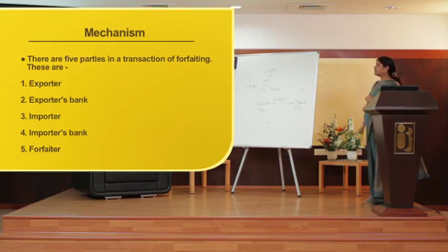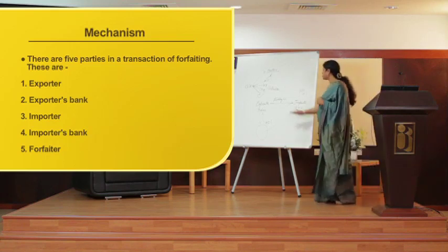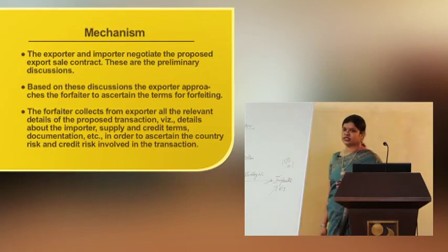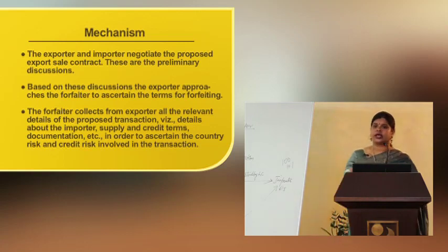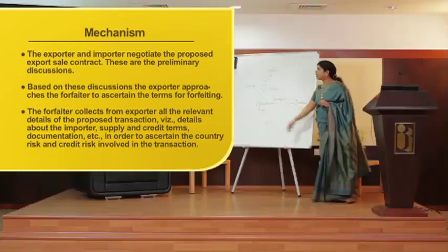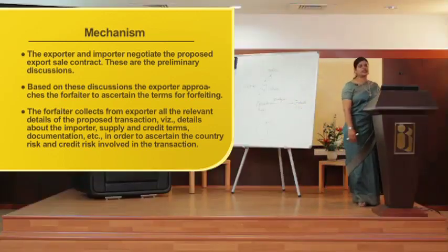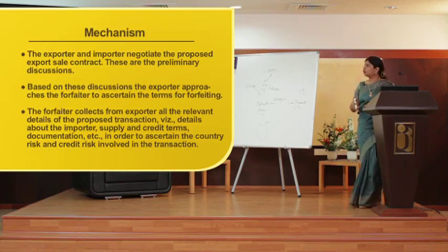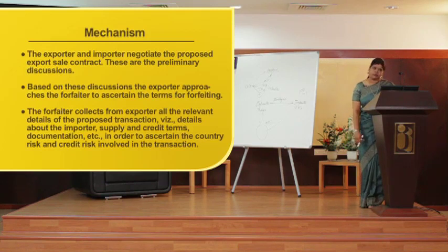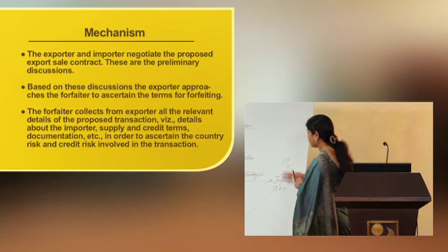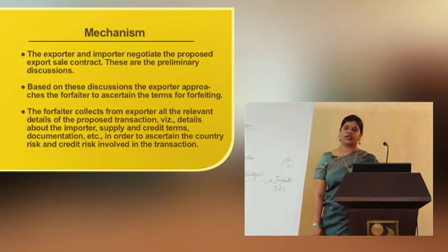Now what is the mechanism? The exporter and the importer negotiate the proposed export sale contract. These are the preliminary discussions, so there will be a contract between the exporter and importer regarding the goods that are going to be delivered. Based on these discussions, the exporter will approach the forfeiter to ascertain the terms for forfaiting, because at the end of the day it is the forfeiter who is going to fund the exporter.